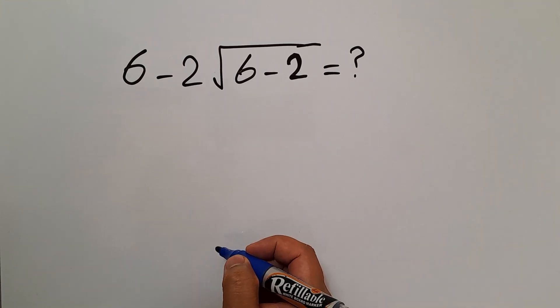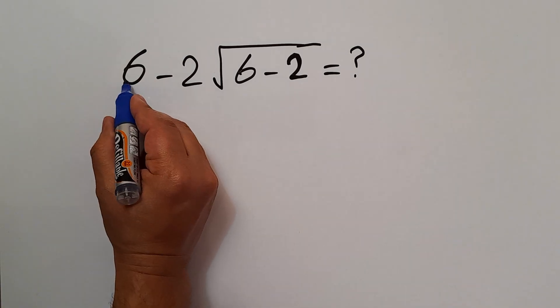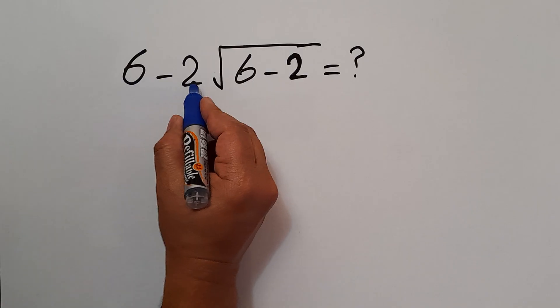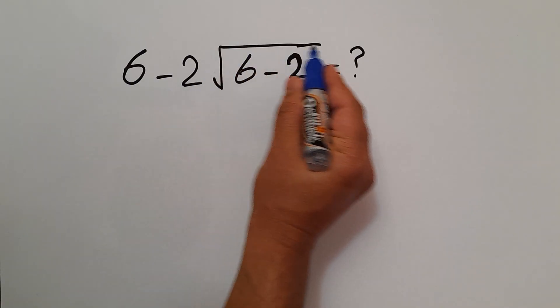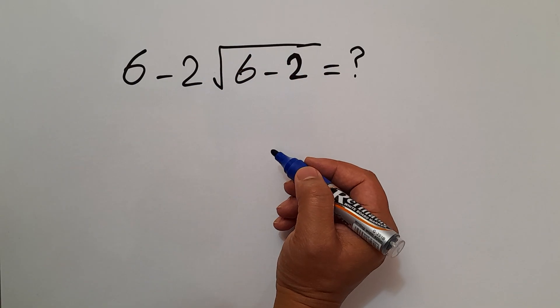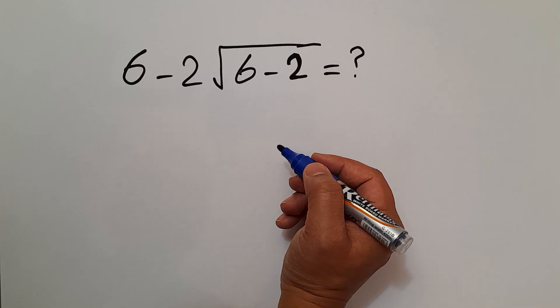Hey guys and welcome to this video. In this video we want to find the value of this expression: 6 minus 2 times square root of 6 minus 2. Are you ready to solve? Let's go ahead and get it started.